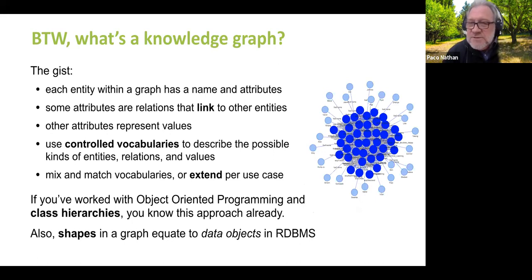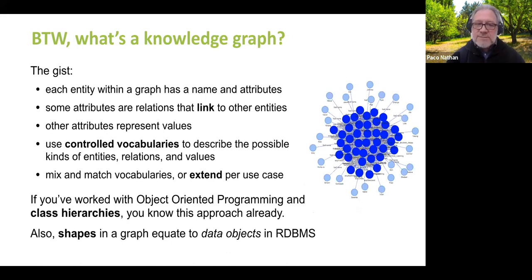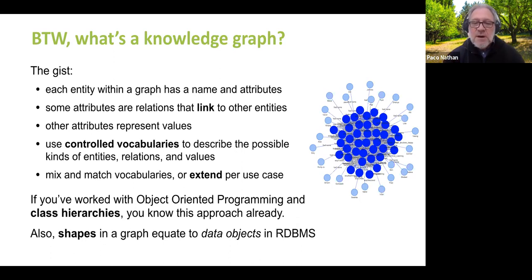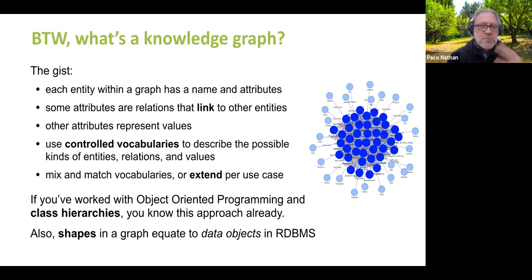What's a knowledge graph? If you think of relaxing some of the constraints you'd typically have when representing data in a relational database, and instead think about the general case of having an entity that has a unique name and some attributes — some of those attributes are links out to other entities, some are values — we have controlled vocabularies that describe the metadata that's possible. What are the relationships that define links between entities? What are the representations of values like date formats? Controlled vocabularies put together become ontology basically, and you can mix and match these or extend them based on the use case. There's a fairly close correspondence between a lot of the practices from years of object-oriented programming.